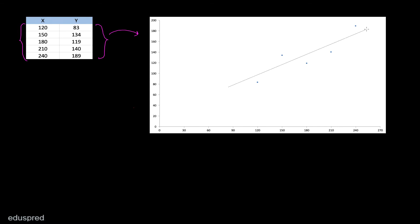So let me try to draw a rough line over here using the intuition that we developed. If you want, you can also extend this line till the vertical axis to visualize the intercept as well. So this is just a rough line of best fit. This blue dot is the first actual Y value, which we can call Y1 — in our data, this value is equal to 83. This dot is Y2, this is Y3, Y4, and Y5. So these blue dots represent the actual Y values.